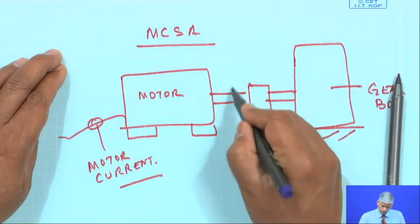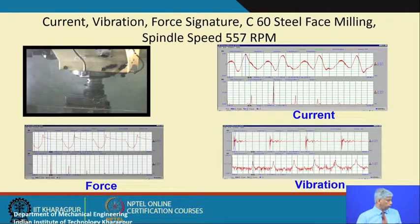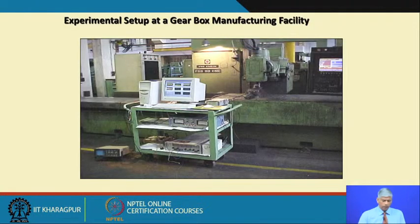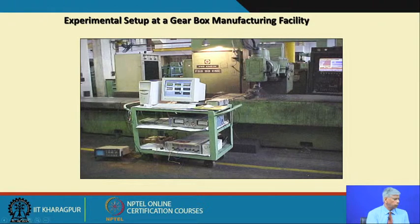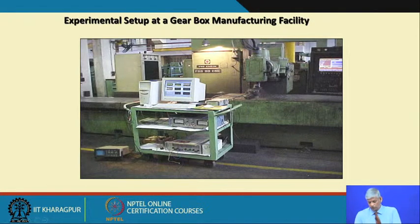Any load torque which comes because of a defect — in this particular case because we are machining steel — generates a current, force, and vibration response. We tested this system, which we developed, at a gear box manufacturing facility online on a CNC machine. We developed this algorithm in our labs and implemented it in an online gear manufacturing facility. Twenty years ago the systems required an oscilloscope and a large desktop with signal conditioning amplifiers and filters, but today everything can be done even on a small laptop with a little DAQ card.